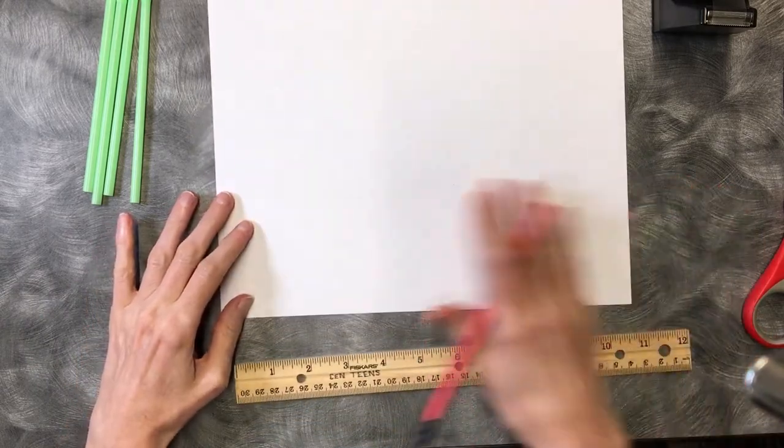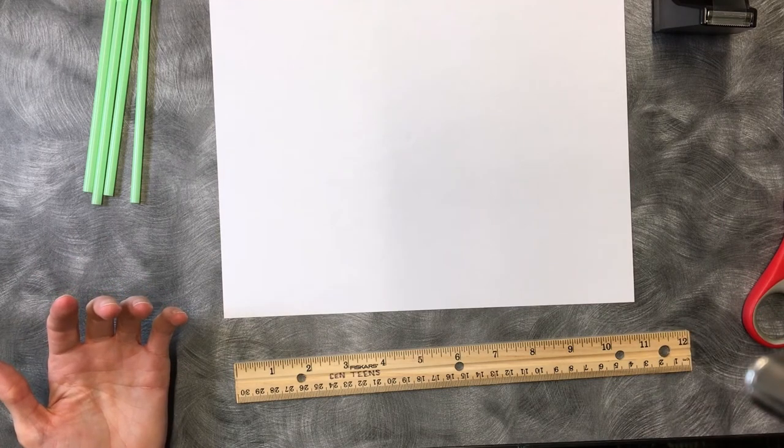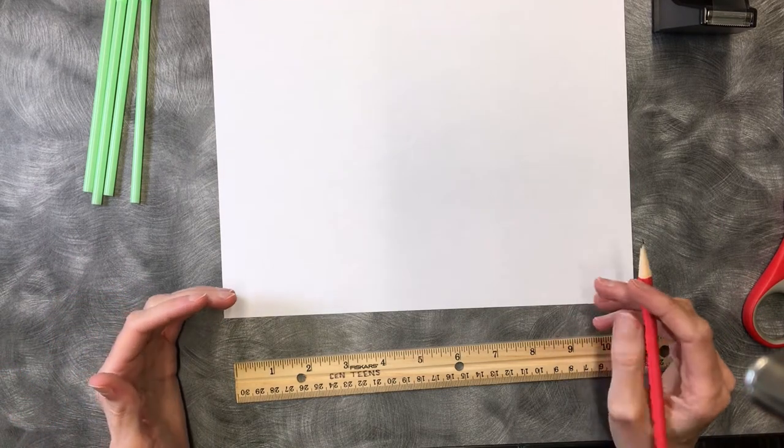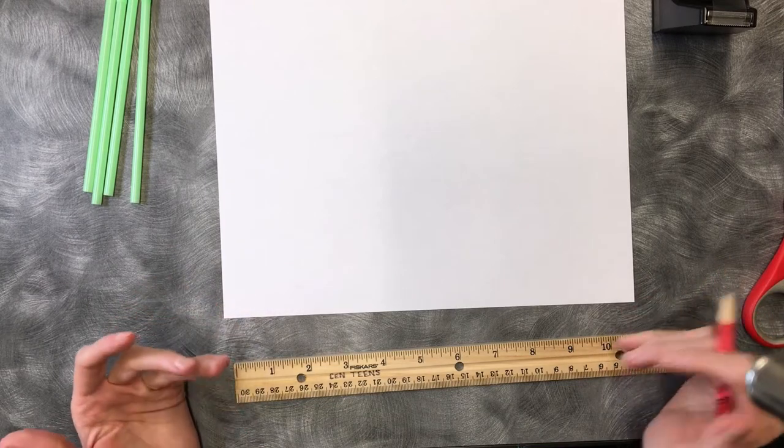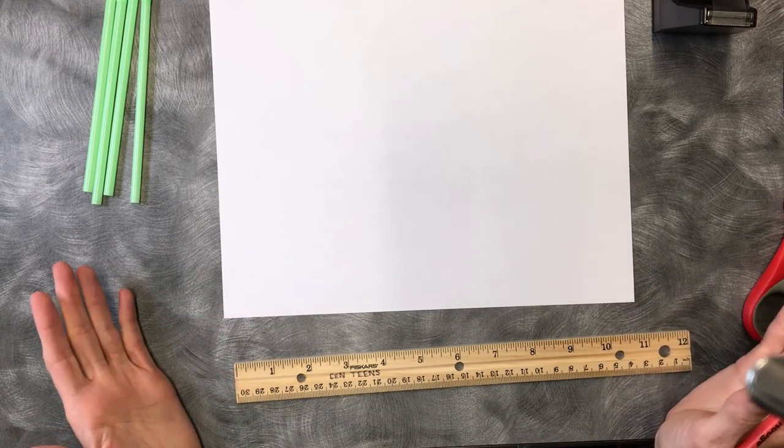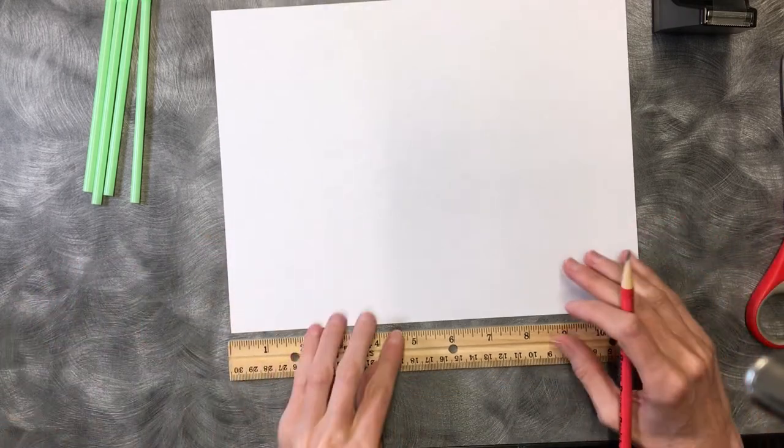First we're going to start with the cardstock and what we need is two rectangles. One ten inches long by one inch and another five inches long by one inch. I'm going to show you the easiest way to mark this out on your paper so that you don't have to make so many cuts.